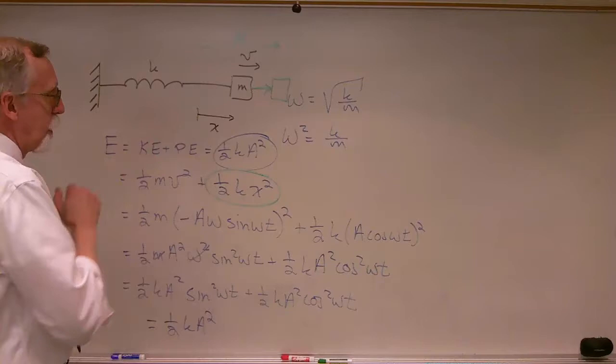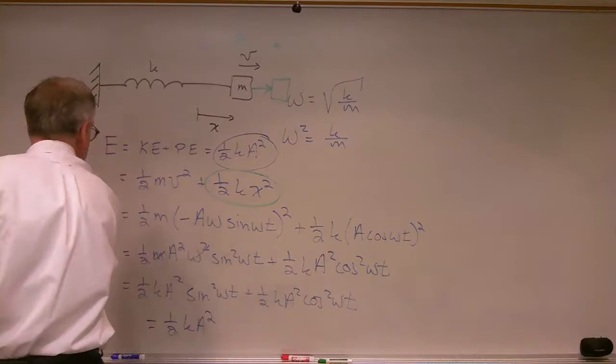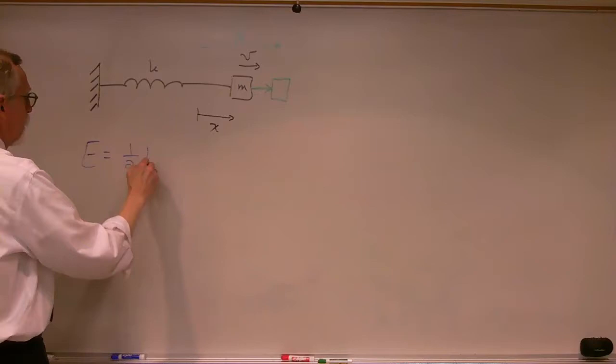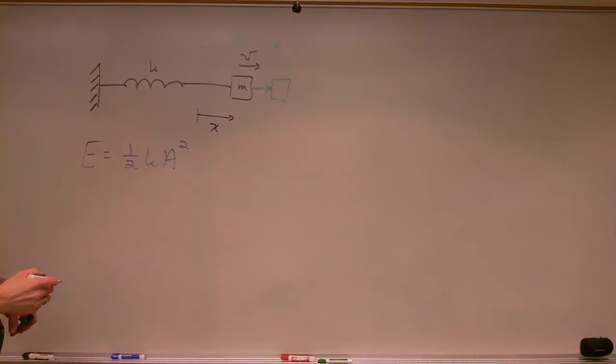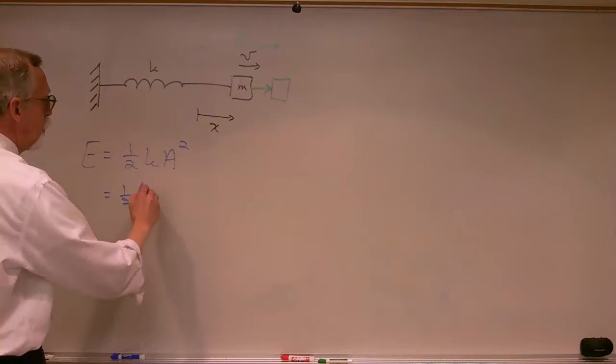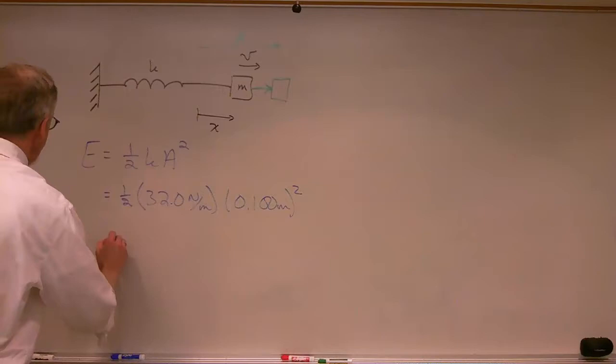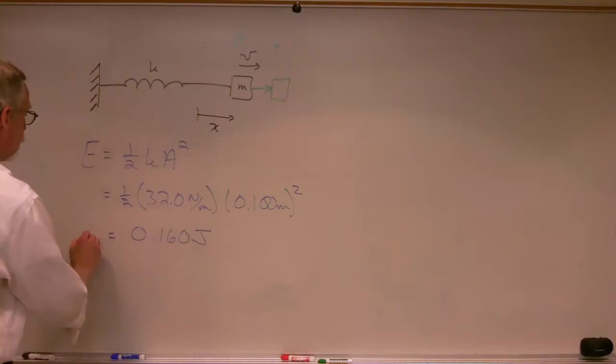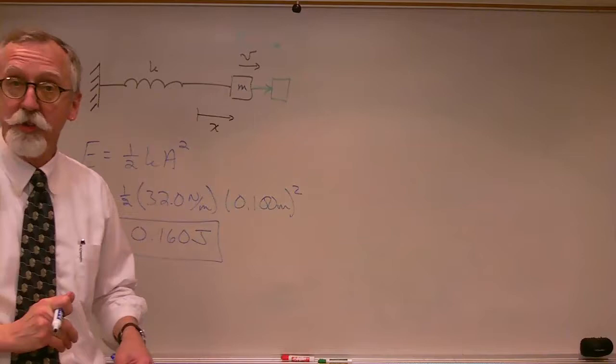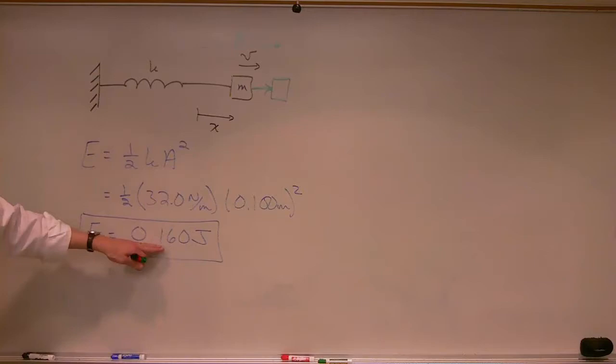We can stick the values in from our previous problem to find the total mechanical energy. The total energy is one-half k A squared — one-half times 32 newtons per meter times 0.100 meters squared — multiply that out and we get 0.160 joules. That is the total mechanical energy of the system.